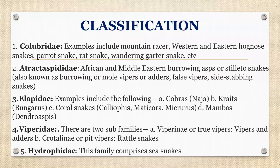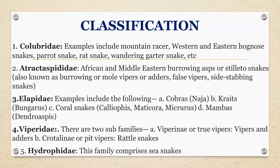The classification of snakes is mainly divided into five families: Colubridae, Atractaspididae, Elapidae, Viperidae, and Hydrophidae. Important ones are Elapidae — which includes cobras, kraits, and coral snakes — Viperidae, which includes vipers, and Hydrophidae, which includes sea snakes. Colubridae includes the parrot snake, rat snake, and wandering garter snake. Atractaspididae are the African and Middle Eastern burrowing or stiletto snakes, also known as mole vipers or adders.